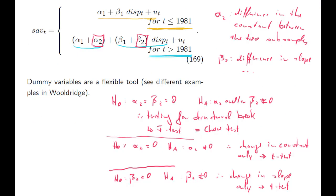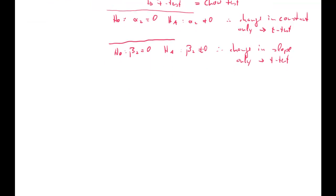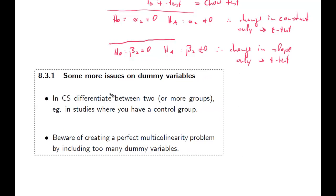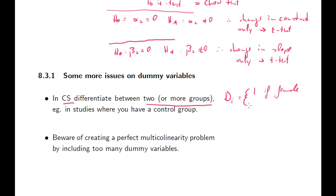There are a few more issues we have to talk about with respect to dummy variables. The dummy variable in cross-sectional data can differentiate between two or more groups. We could for instance have a DI if you have cross-sectional data, if you differentiate between genders, which takes a value 1 if we have a female observation and 0 if male. Otherwise the same mechanics apply.